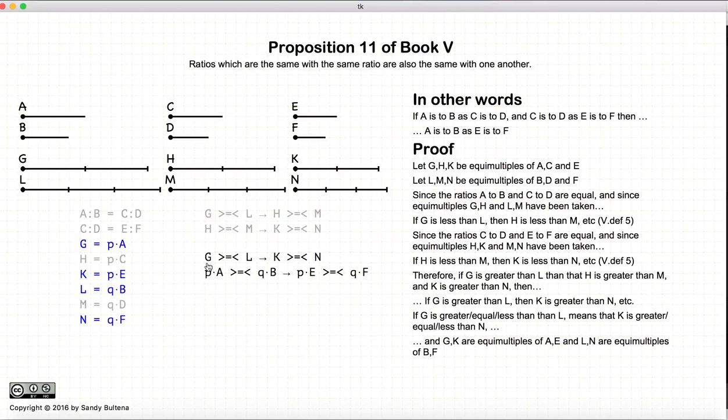Well, what does g equal? g is equal to p a, l is equal to q b, k is p e, n is q f. So we have if p a is greater than q b, this implies that p e is greater than q f. And again, this is the definition of the equality of two ratios, such that a to b will be equal to e to f.